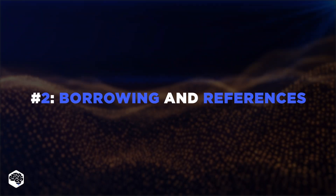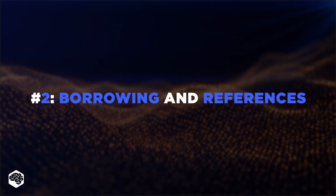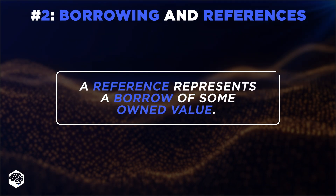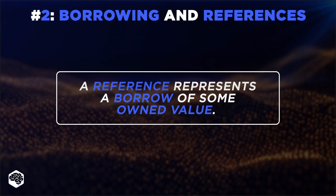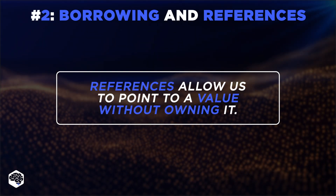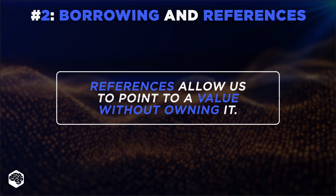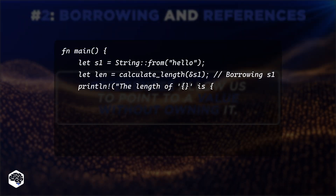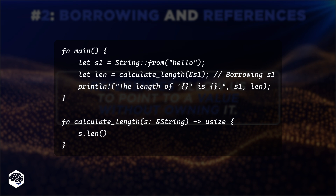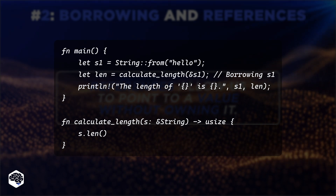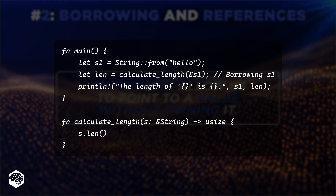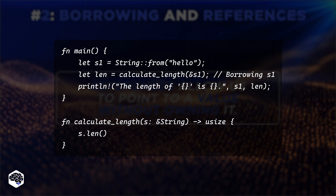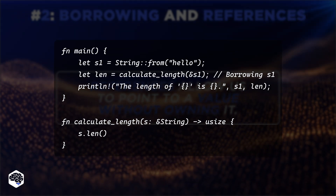Another specialty of Rust is borrowing — referencing data instead of transferring ownership. With borrowing, you can have multiple references to the same data, ensuring safety and efficiency, particularly in concurrent programming. In this Rust code, the calculate_length function borrows the string S1 using an immutable reference, allowing it to read and return the string's length without taking ownership. This borrowing mechanism ensures that S1 remains valid and usable in the main function after the function call.